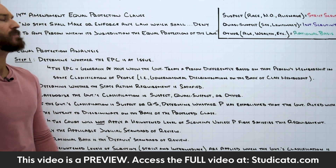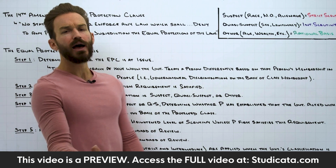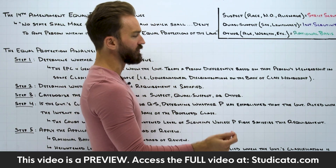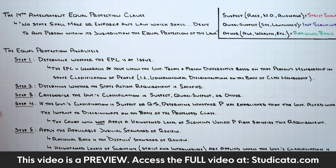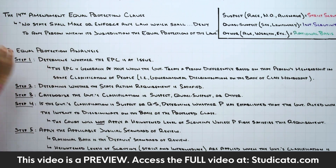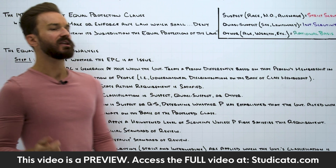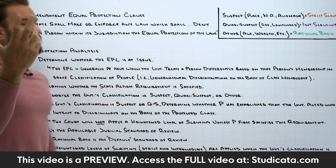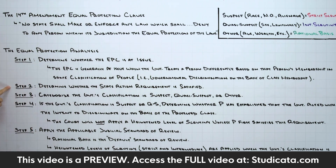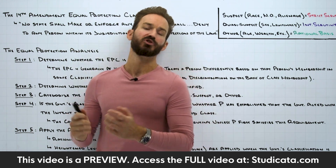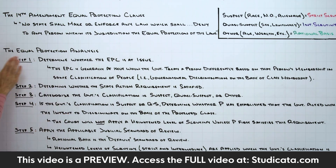What do we do if we encounter what we think might be an equal protection issue on a constitutional law fact pattern? Step one is issue spotting — we need to determine whether the Equal Protection Clause is at issue. The Equal Protection Clause is generally at issue when the government treats a person differently based on that person's membership in some classification of people. Basically, when we have governmental discrimination on the basis of class membership. This does not mean the Equal Protection Clause has been violated — it just means the clause might be at issue and we can proceed to step two.